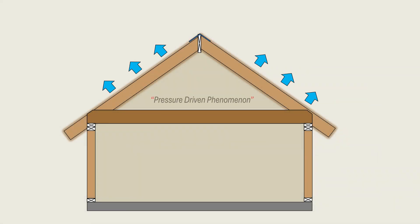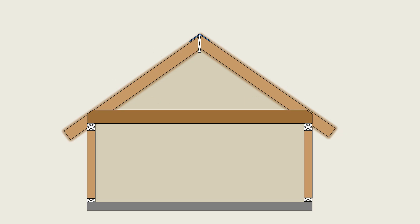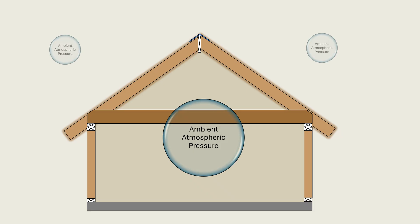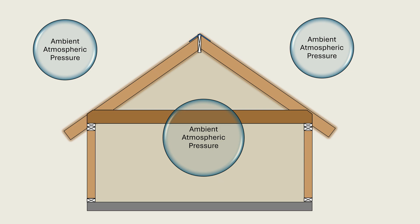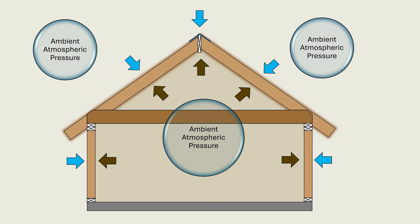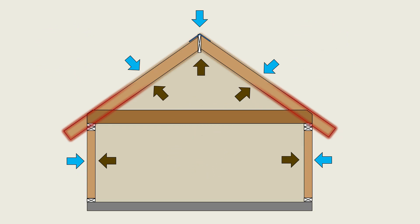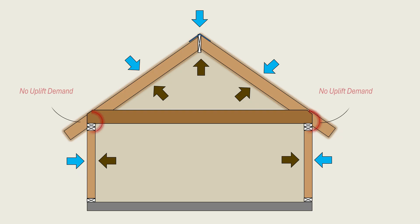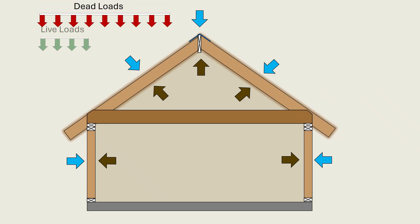Wind uplift is a pressure-driven phenomenon. To understand how uplift forces develop on a residential roof, it is helpful to begin with calm conditions. Under calm conditions with no significant wind acting on the structure, a residential building exists in equilibrium with its surroundings. The air inside and outside the building are both at approximately ambient atmospheric pressure, acting uniformly in all directions on every surface. Because atmospheric pressure acts on both sides of the roof assembly, it produces no net force on the roof framing, meaning there is no uplift demand on the roof-to-wall connections. In this state, the roof system is governed entirely by gravity loads.